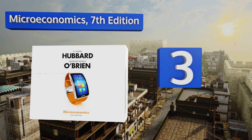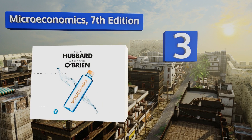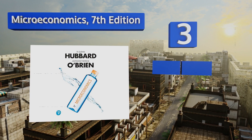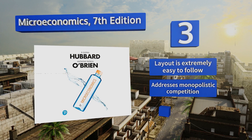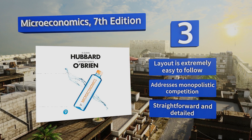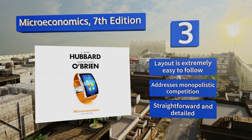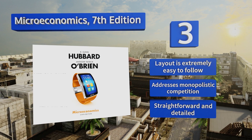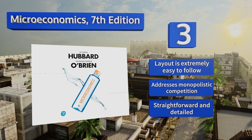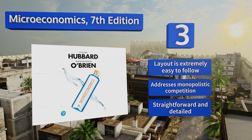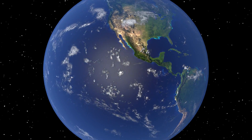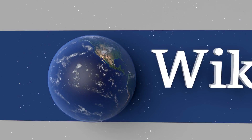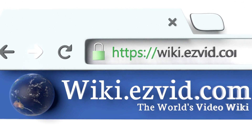Nearing the top of our list at number three, Microeconomics, Seventh Edition uses actual business examples and real policies to explain the forces that propel our economies. It drives concepts home by relating key ideas to personal experience and uses modern companies and their products to reinforce comprehension. The layout is extremely easy to follow and it addresses monopolistic competition. It's straightforward and detailed.